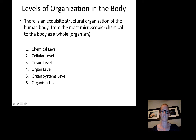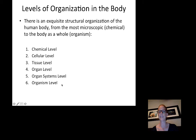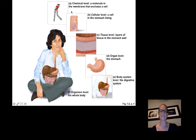Now we'll cover the six levels of organization in the human body, from the most microscopic to the body as a whole. These are: chemical, cellular, tissue, organ, organ system, and organism. We'll go through each one individually on its own slide, going from the tiniest molecules all the way up to the body system and the organism.